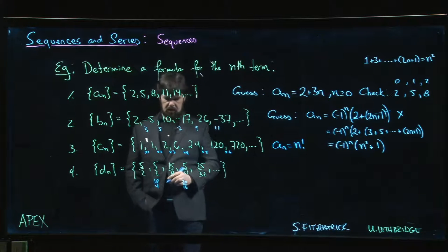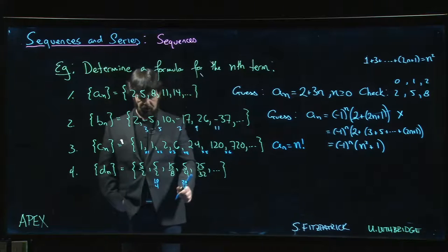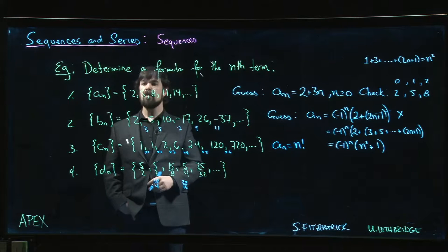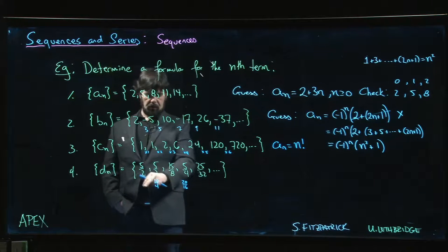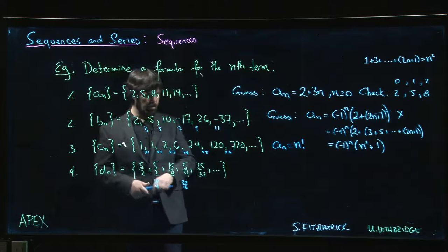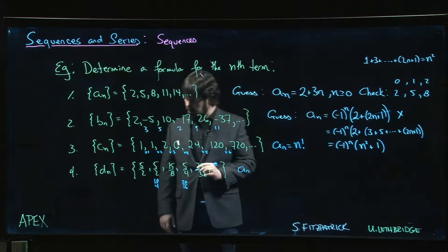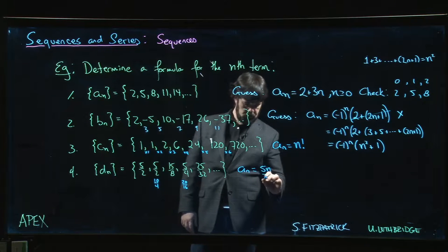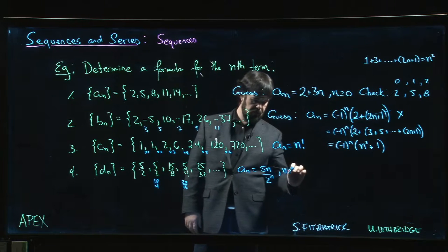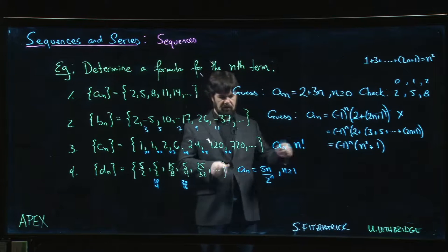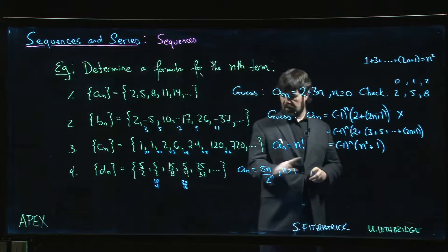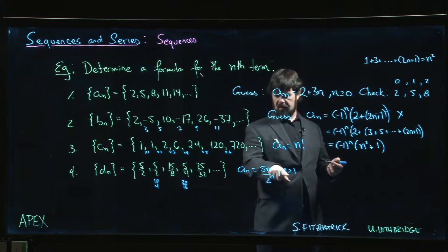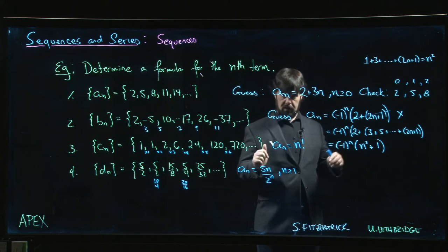Once we don't reduce the fractions, the numerators are 5, 10, 15, 20, 25 — multiples of 5 — and the denominators are 2, 4, 8, 16, 32 — powers of 2. So the formula is a(n) = 5n / 2^n, starting at n=1. Checking: n=1 gives 5/2, n=2 gives 10/4 = 5/2, n=3 gives 15/8. It works.